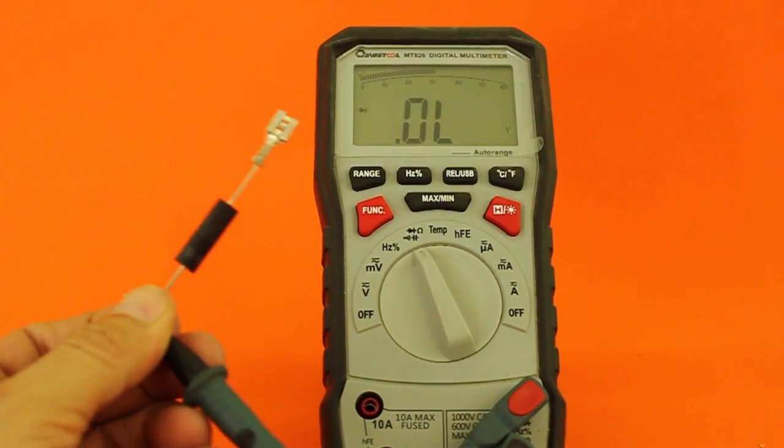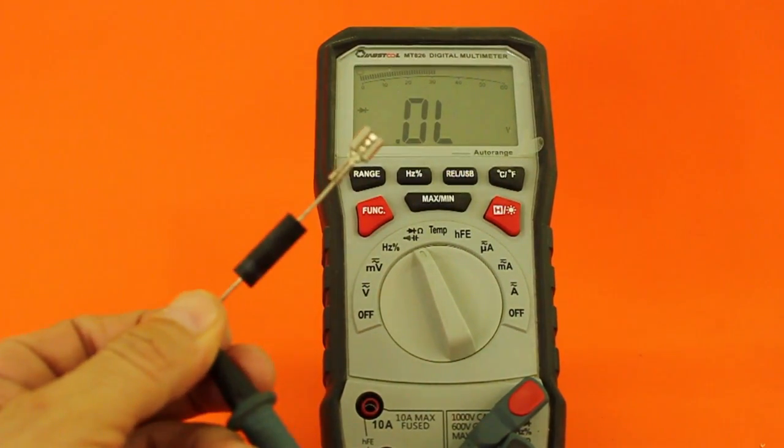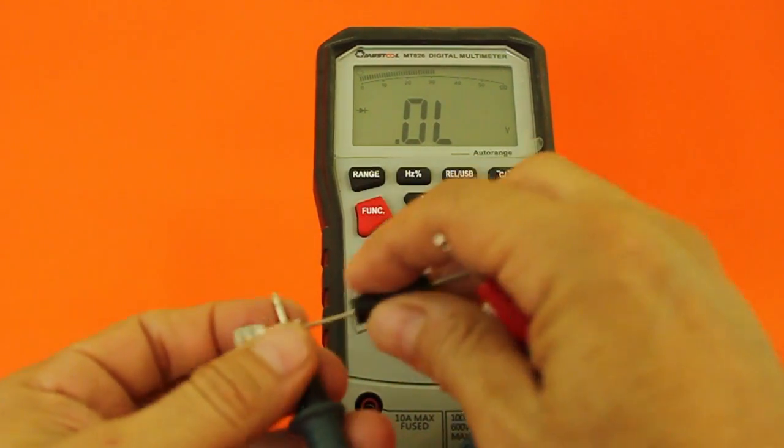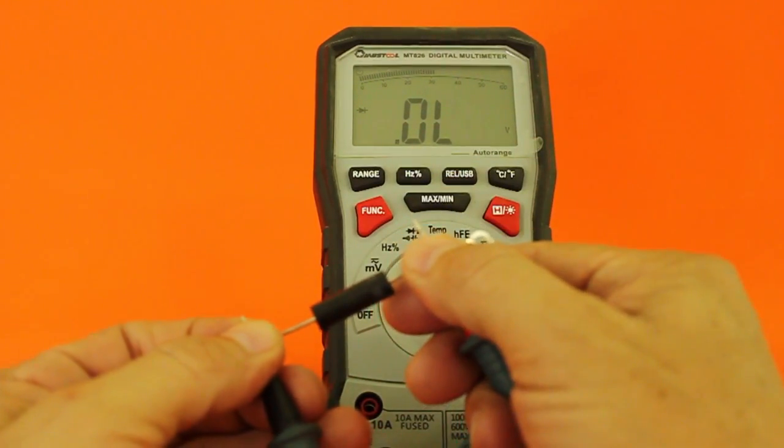However, if you try to do the same with a high voltage diode, you will see that the multimeter does not show any reading at all.